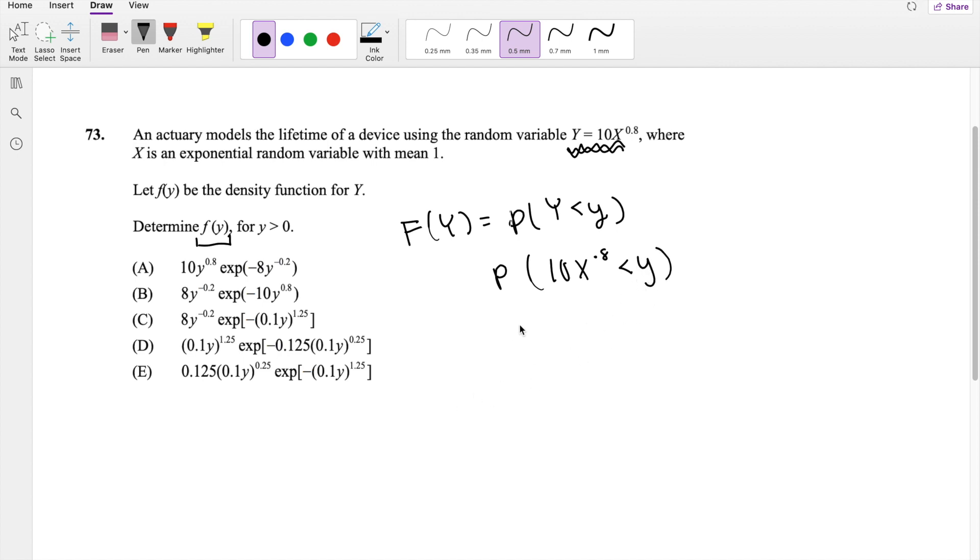Okay, and solving for x here, because we do know that x is an exponential function with mean is equal to 1. So once we can get it in terms of x, it's kind of easy for us to figure this out. So now this is probability that x to the 0.8 is less than y over 10.